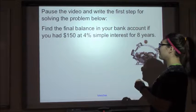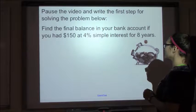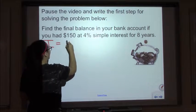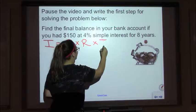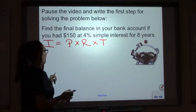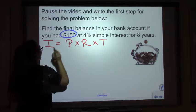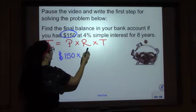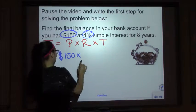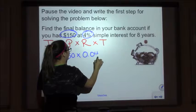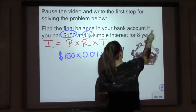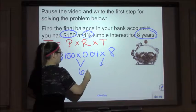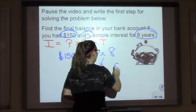This problem says: find the final balance in your bank account if you had a hundred and fifty dollars at four percent simple interest for eight years. Our equation is Interest = Principal × Rate × Time. Our principal is a hundred and fifty dollars; our rate is four percent, which in decimal form is 0.04; and our time is eight years. Multiplying: 150 × 0.04 = 6, then 6 × 8 = forty-eight dollars.